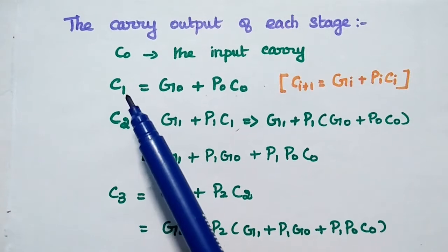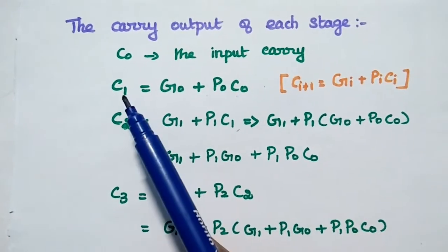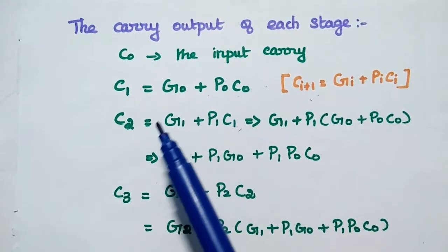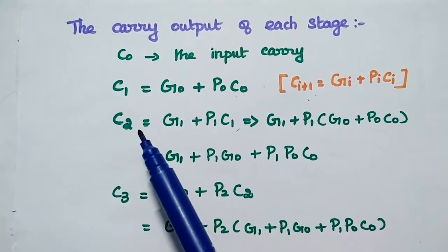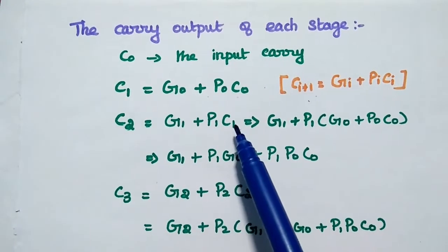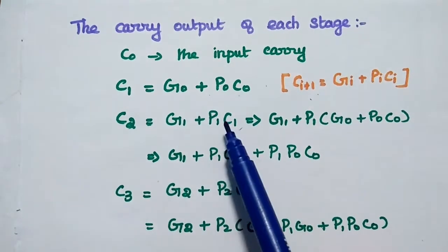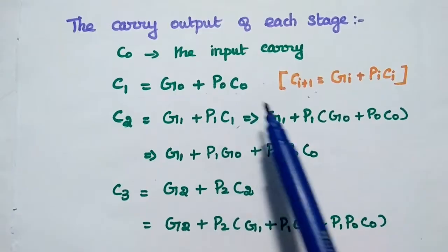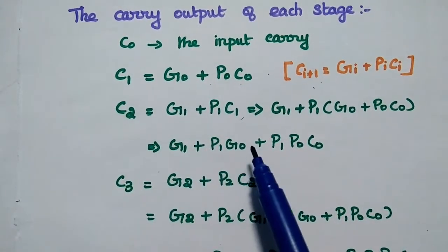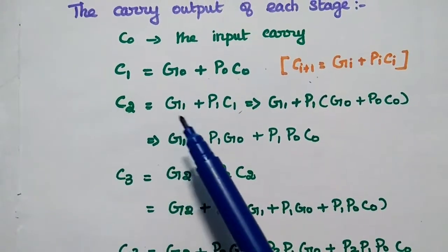C1 is the carry of the second full adder, and it is the carry input for the second full adder. So C1 = G0 + P0 · C0. C2 is the input carry for the third full adder. C2 = G1 + P1 · C1. Substituting C1, we get C2 = G1 + P1 · (G0 + P0 · C0), which expands to C2 = G1 + P1·G0 + P1·P0·C0. This is the input carry for the third full adder.